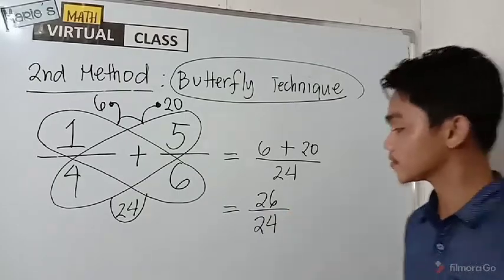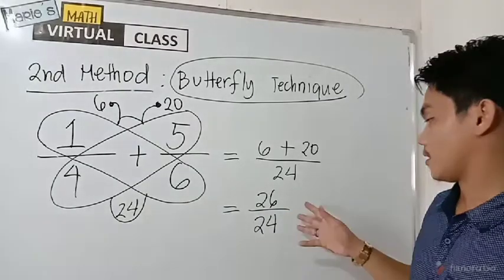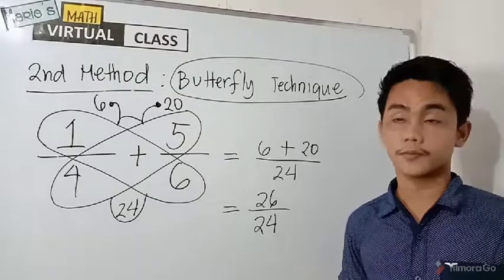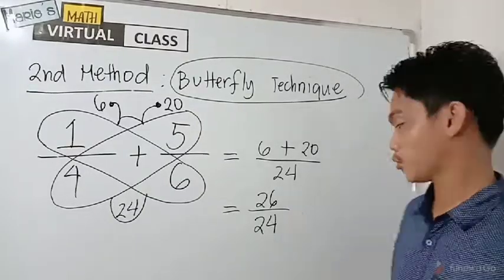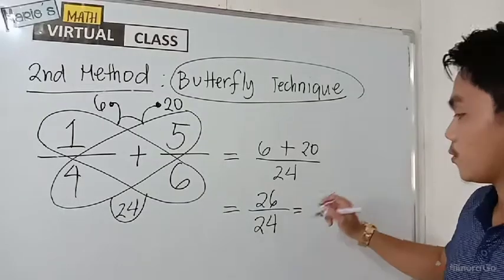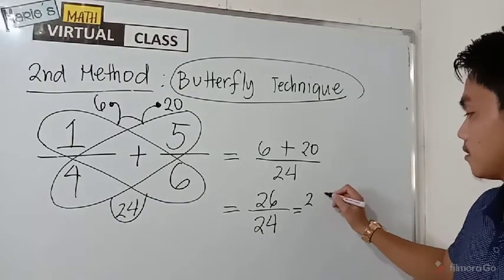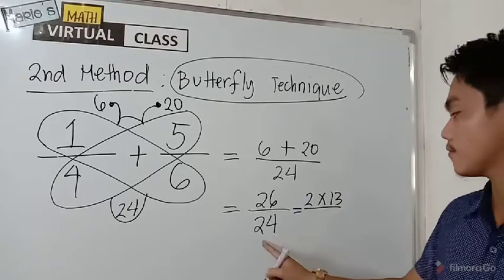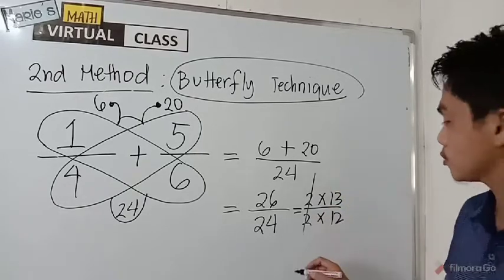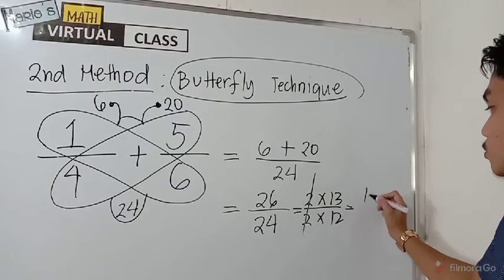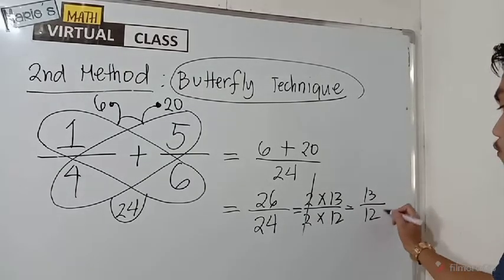But as you can see, we have here a fraction not in its lowest term. We know that twenty-six and twenty-four are multiples of two. So we may factor twenty-six, two times thirteen, and twenty-four, two times twelve. So we can cancel out two here. Our final answer would be thirteen over twelve.